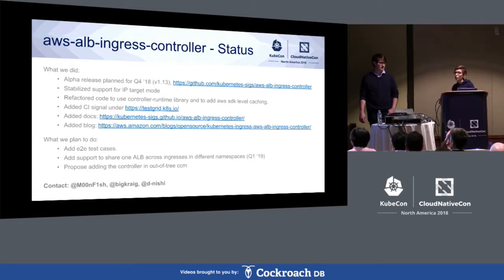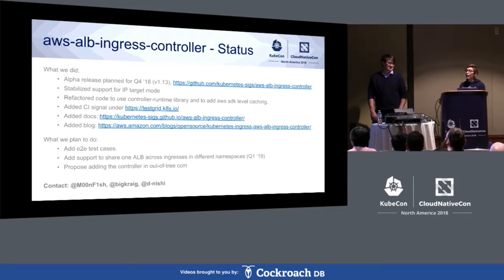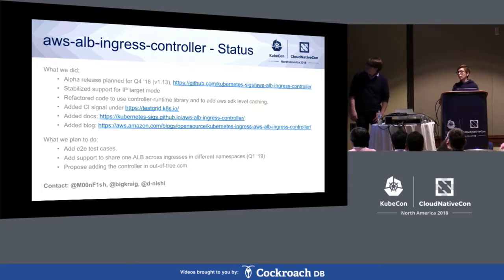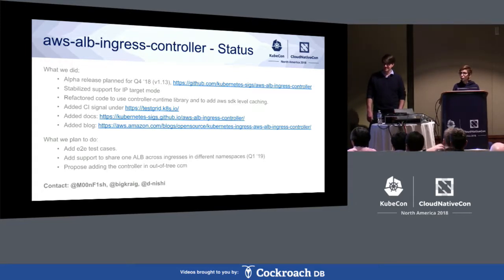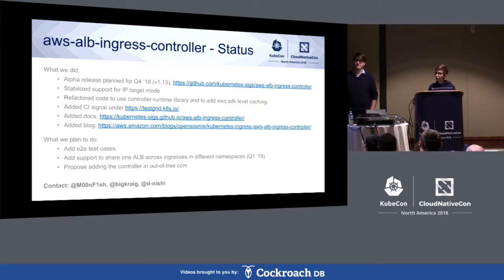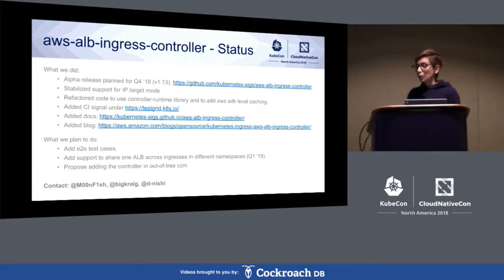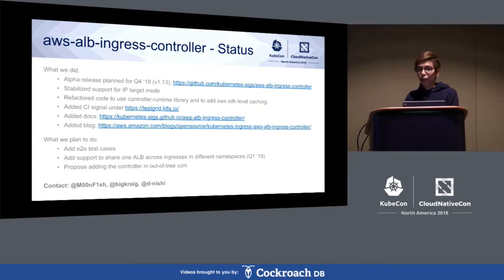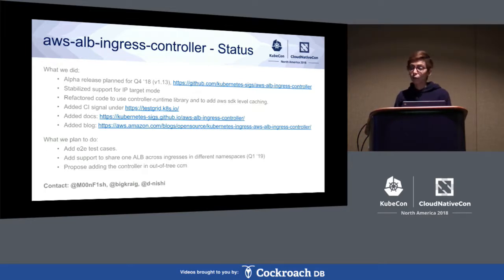We released the AWS ALB ingress controller. Sometimes there are so many API objects in Kubernetes it's confusing, so it helps to talk about the concept. We did an alpha release for the ingress controller. The initial design was provided to us by CoreOS, but we had to refactor a ton of the code. We did some optimizations like using the controller runtime library provided by SIG API machinery, and also adding AWS SDK-level caching. We added support for not just node port - also called traffic mode type instance - but pod IP, which means you can route ALB traffic directly to the pod if the cluster has support for CNI Kubernetes.